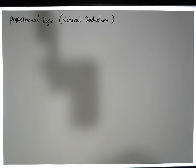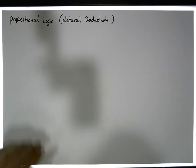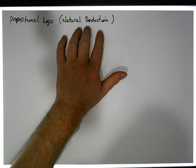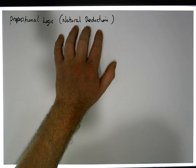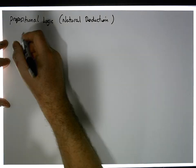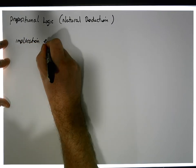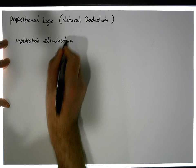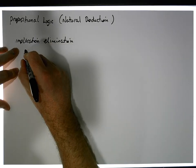Hi guys, this is Jonathan Lambert with the Mathematics Development and Support Service at the National College of Ireland. In this short video, another in our series dealing with propositional logic and natural deduction, we're going to introduce another two rules. They have to do with implication elimination, and there are two forms of that.